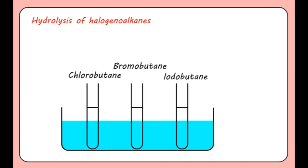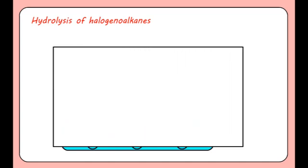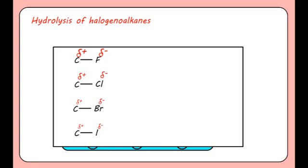It might be expected that the greater the polarity between the halogen and carbon, the more reactive the haloalkane. Bond polarities decrease going down group 7. As a result, we would expect that in our experiment, chlorobutane would undergo hydrolysis the quickest and iodobutane would be the slowest. However, the reverse is true.